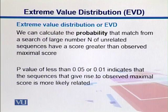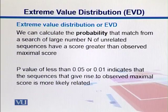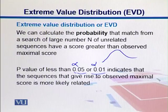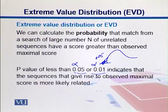We get those probabilities from the previous equation. P-values less than 0.05 or 0.01 indicate that sequences giving rise to observed scores are most likely related — those are the significant p-values. We are looking for the standard alpha of 0.05 or 0.01. If we draw our distributions and set our significance level alpha, any value lying in that tail is significant. For stricter conditions, we look at the lower 1%, making alpha equal to 0.01.